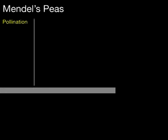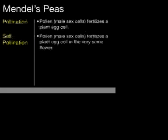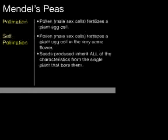One of the plants Mendel grew in his garden were peas, and peas, like all plants, reproduce through pollination. In pollination, male sex cells fertilize a plant egg cell. When plants self-pollinate, male sex cells fertilize the egg cell in the very same plant. The seeds produced as a result of this fertilization inherit all of the characteristics from the single plant — it's like they have one parent.